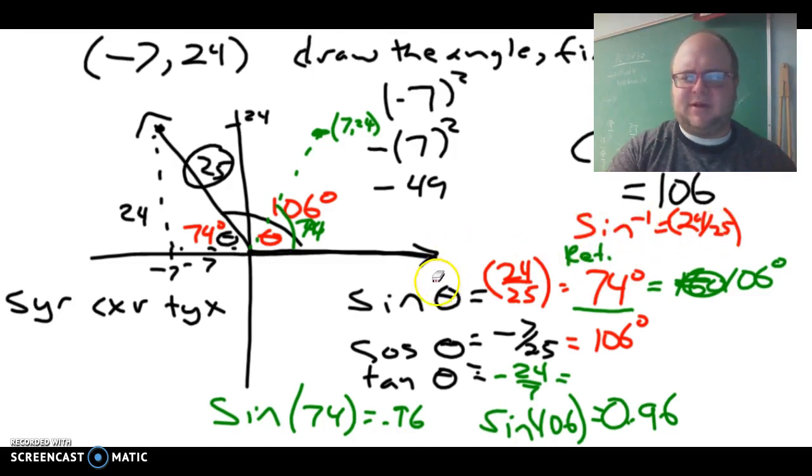Then we looked at taking the trig ratios and finding the angles, and we ran into some confusion where sine was giving an angle of 74 or cosine was giving an angle of 106. Because of where we knew this angle was, it's in quadrant 2, we knew the angle had to be 106, the 74 being the reference angle.